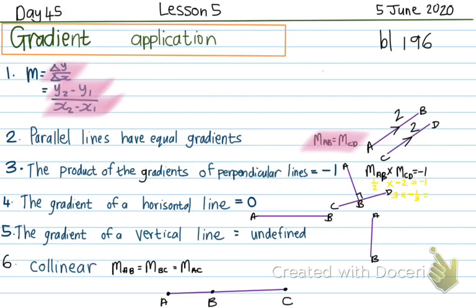For instance, what if the one line has a gradient of negative 4 over 5? Then the other gradient will be positive 5 over 4. I switch the fraction around and use the other sign. So if the gradient of CD is 2 over 3, then you immediately know the gradient of AB will be negative 3 over 2.